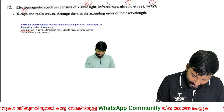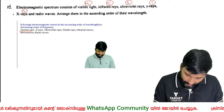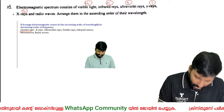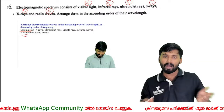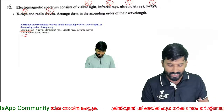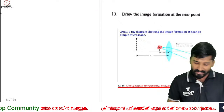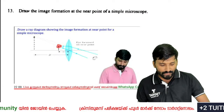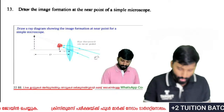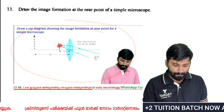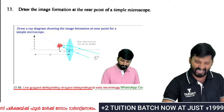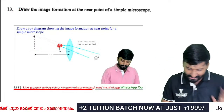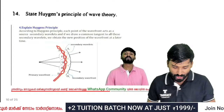Increasing order of wavelength in the electromagnetic spectrum. Draw the image formation at the near point of a simple microscope. In a simple microscope at the near point, the image formed is virtual, magnified, and erect.